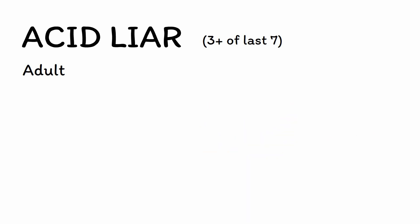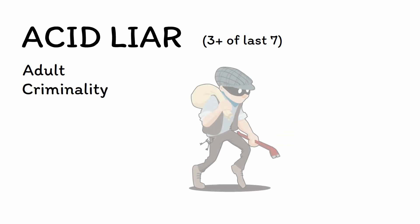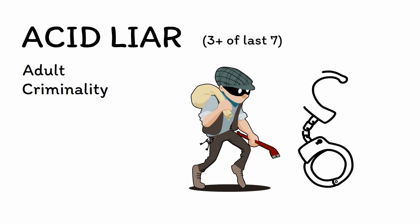C is for criminality. People with ASPD often engage in actions that fall outside of the law, including stealing, fraud, and drug trafficking. This leads many to be arrested or spend time in jail due to their actions.